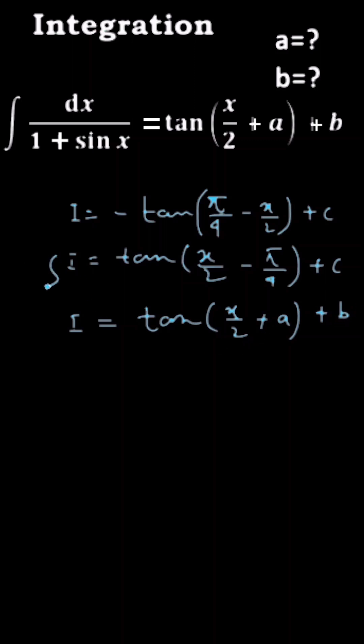Now compare these two you will get the value of a and b. Here a equal to minus pi by 4 and b is equal to a constant quantity.